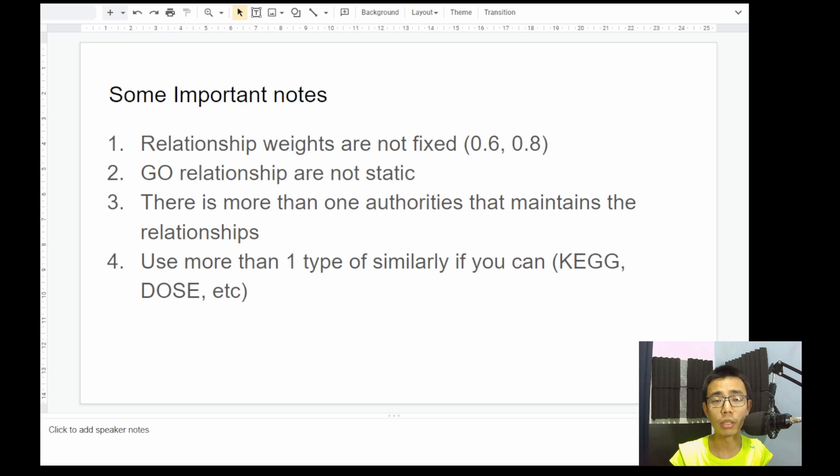This is more like an educational and an exemplary video. The relationship weights are not fixed. 0.6, 0.8 as highlighted in the author are a way of showing you how to do it. They might change from analysis to analysis and from time to time, and the GO relationships again are not static.